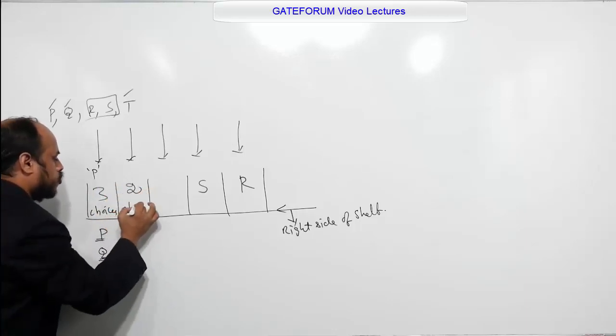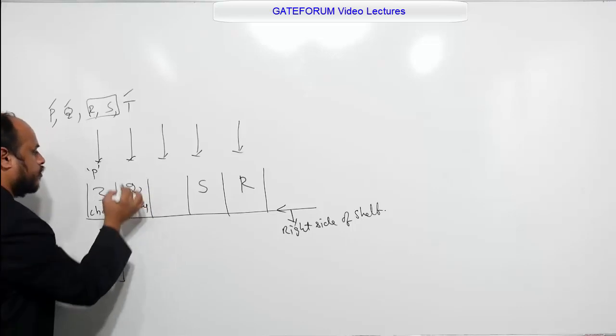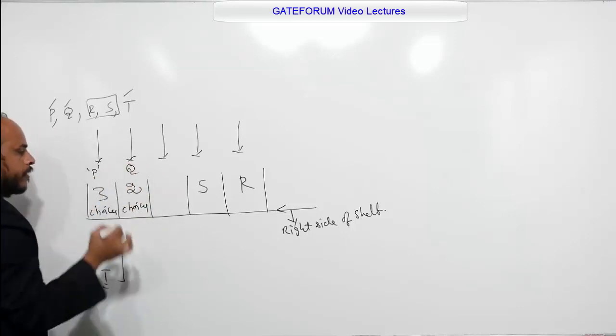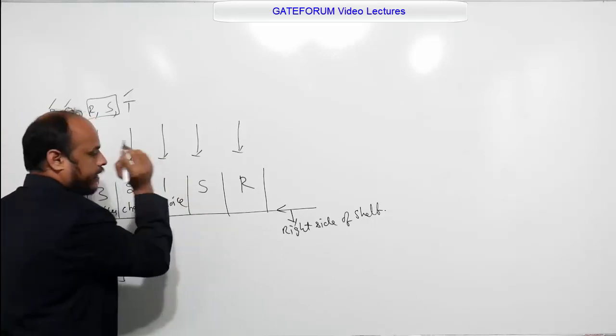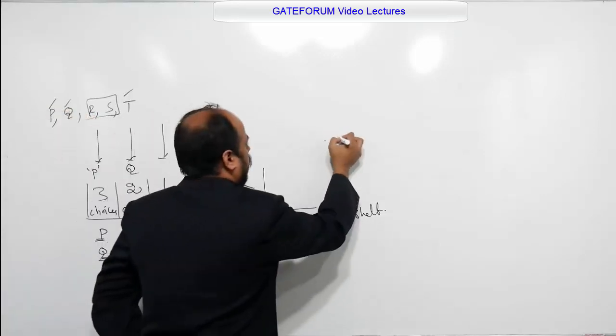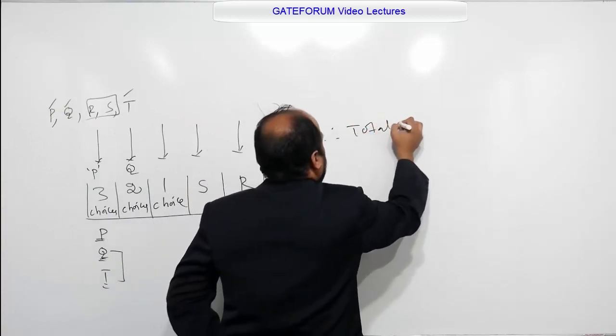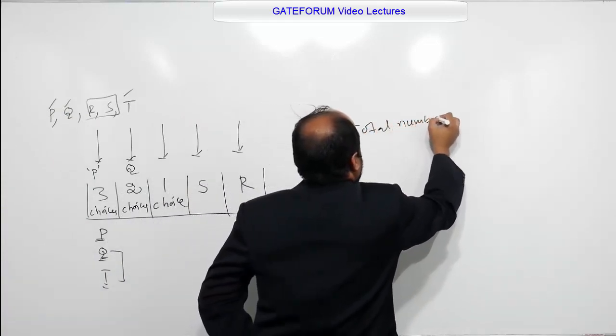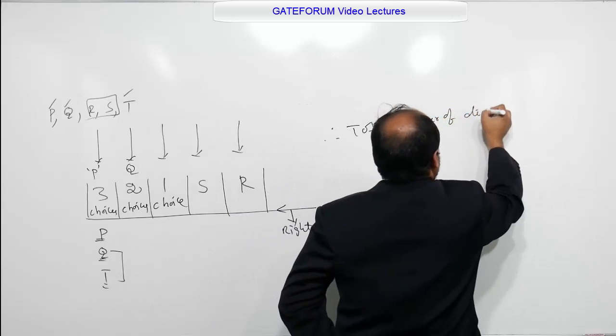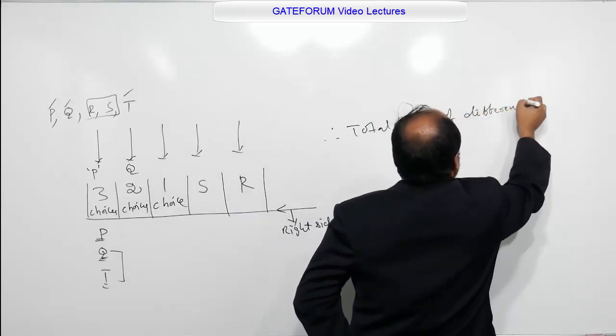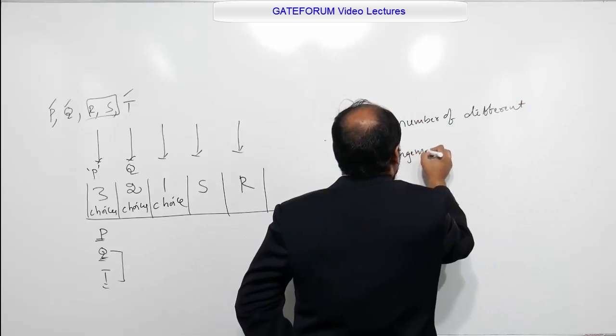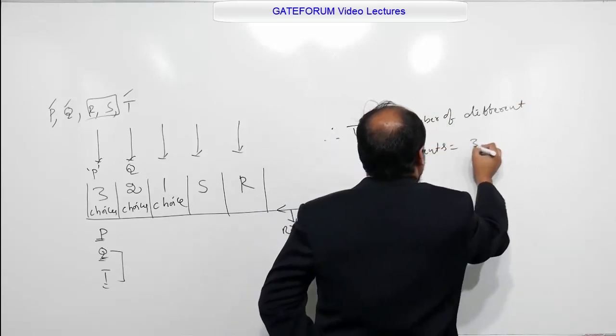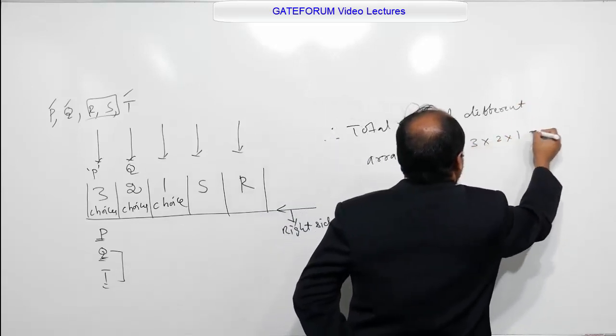Two choices, either Q or T. Suppose we are assuming here, we are filling Q. So to fill this, we have only one choice. One choice only. That is T. Now I will write, therefore, total number of different arrangements is nothing but 3 into 2 into 1 equal to 6.